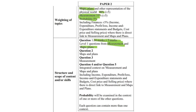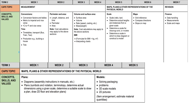Question one is focused solely on lower-order thinking. Questions two, three, and four are when things start to heat up. Question two is solely maps and plans, question three is solely measurement, and then we have a nice integrated context question with measurement, maps and plans, and it could include some paper one concepts too, plus a probability five-percenter — usually the last question of the paper.